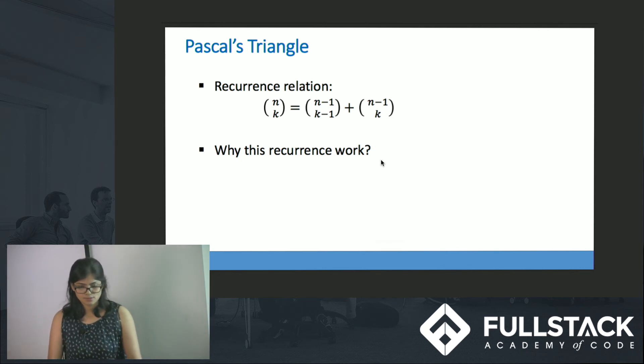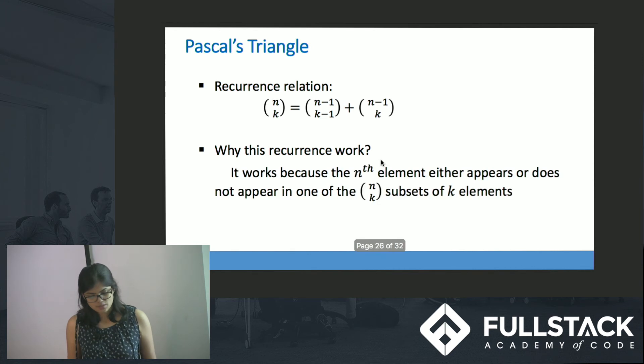Say suppose there are n students and I have to choose k students out of those n students and there is an nth student. If I select the nth student then I am left with n minus 1 possibilities and out of k I have already selected one so I am left with k minus 1 outcomes. That is represented by (n minus 1) choose (k minus 1). And if I do not include the nth student then I am left with n minus 1 possibilities but I have to choose k students. That is why the recurrence works.